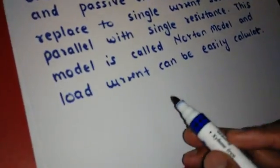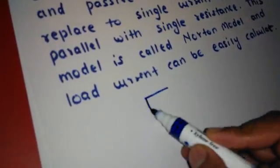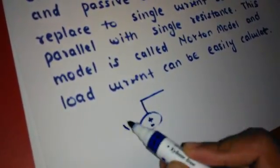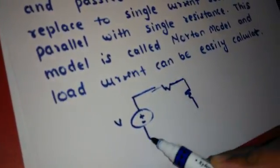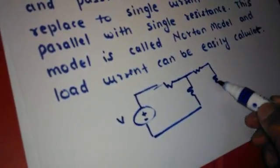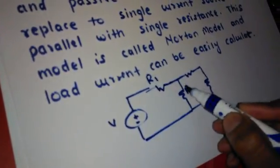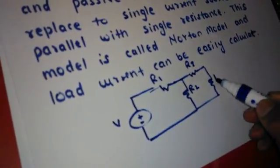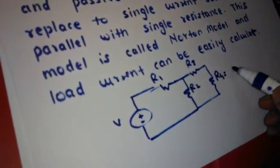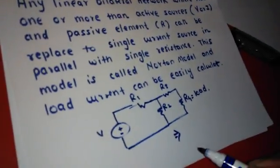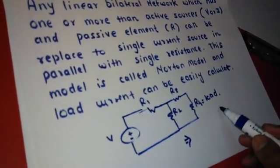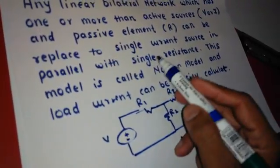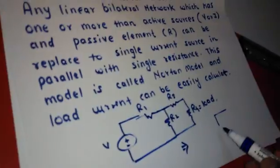Now, let us assume a circuit like this. There is a voltage source which has a number of passive elements connected — suppose R1, R2, R3, and R4, where R4 is taken as the load resistance. So this DC network can be replaced or reduced to a simple Norton model, which is a single current source as we have seen in the definition or statement.